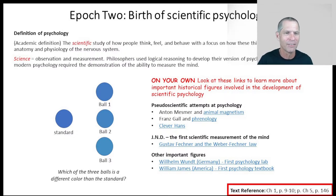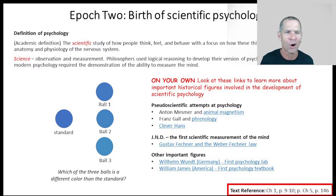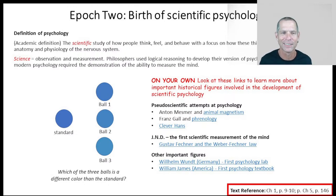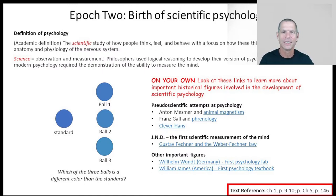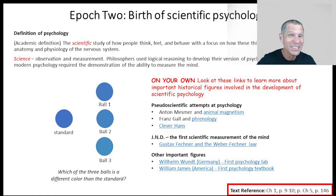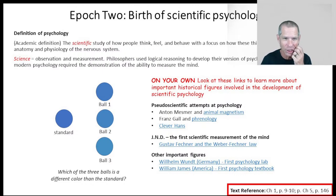Look over here on this side of the screen — you'll see a standard ball and three balls. My question is: which of these balls is a different color than the standard? Ball one looks exactly like the standard; ball two is probably different; and ball three is definitely different. I've varied the color intensity on these three balls slightly from the standard. Ball one didn't change enough for you to detect the change. This is a demonstration of what's known as the just noticeable difference — whether you're looking at weight, light intensity, or how sweet something tastes, something has to change 1/40th of its original intensity for a human being to detect that change.